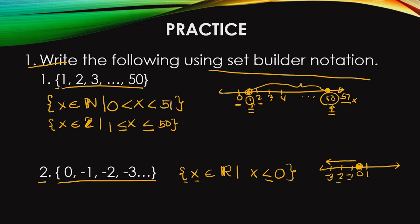So for negative values, we go further to the left. The further away we are from 0, the smaller the negative value becomes. So we use less than, because 0 is greater than negative 2 or negative 3. Or we can write a set of elements of integers such that x is less than 1.